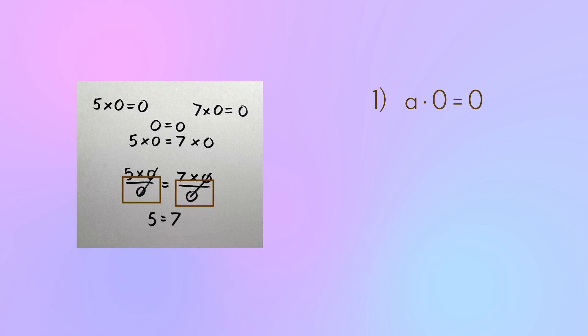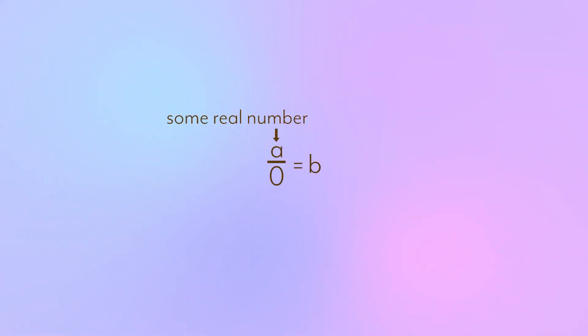The next thing we did was we divided both sides of this equation by zero, but hang on a second, because we actually need to take a step back and see if we can divide by zero in the first place. The mathematical statement that you can divide by zero is simply a over zero equals b.